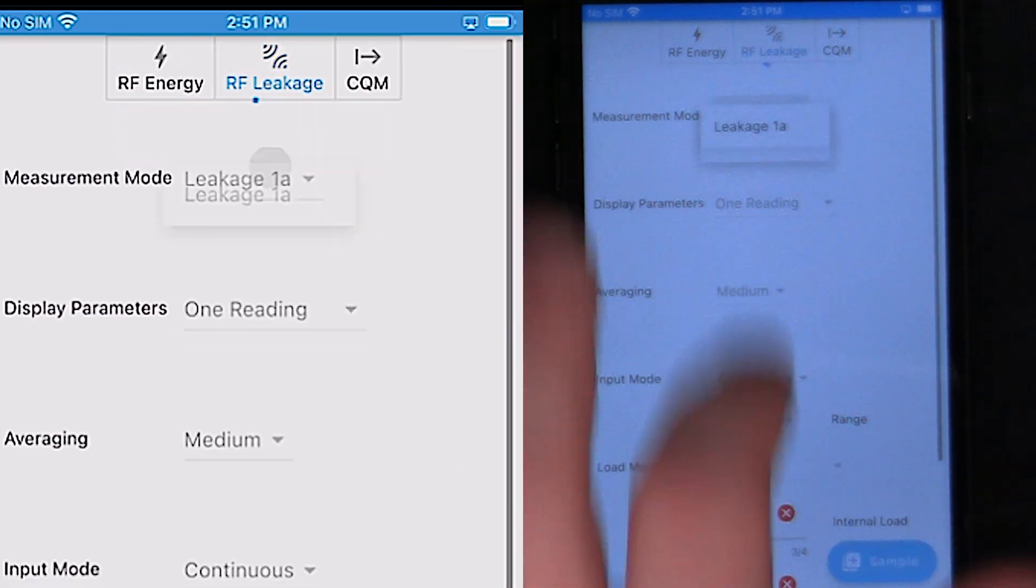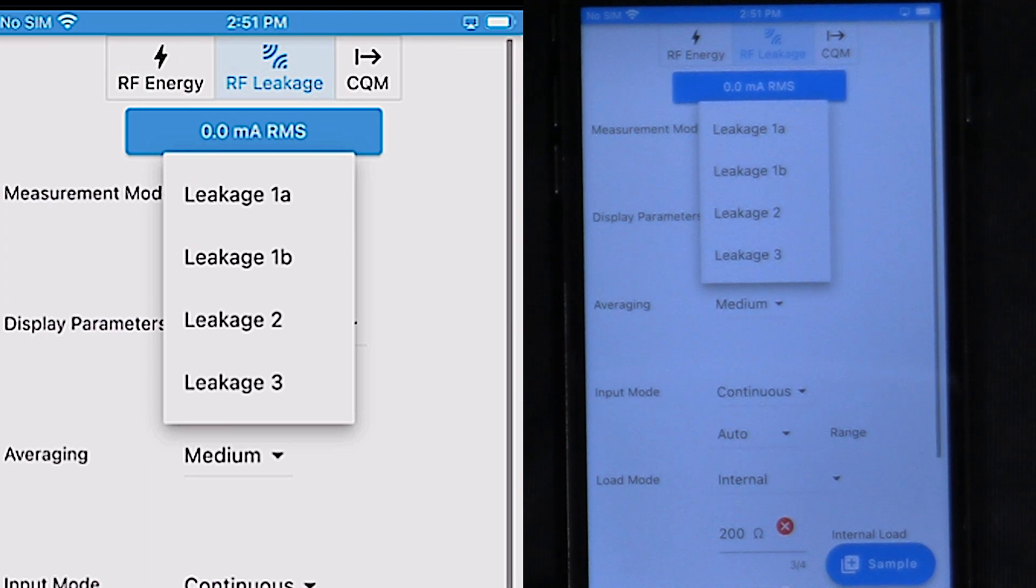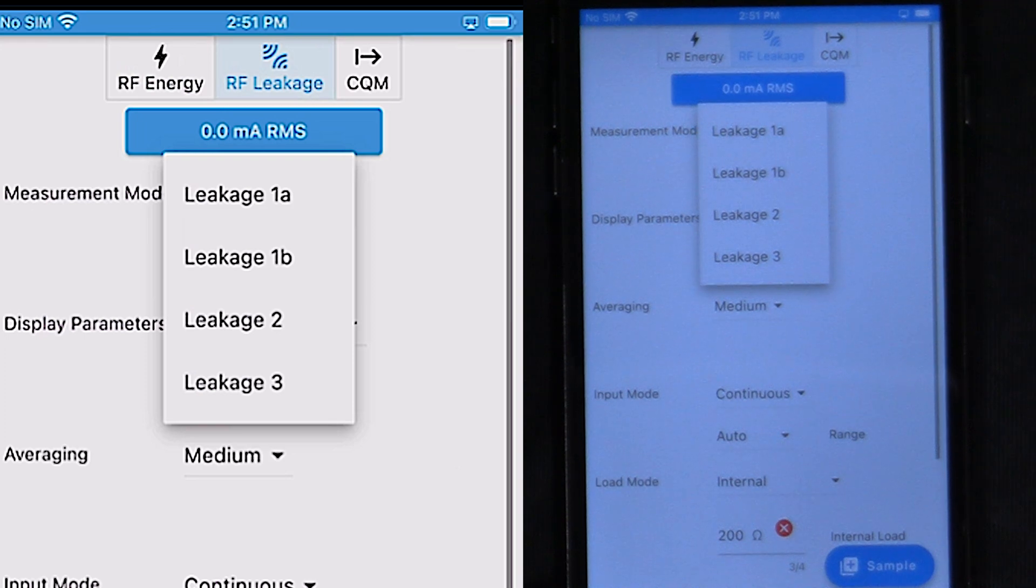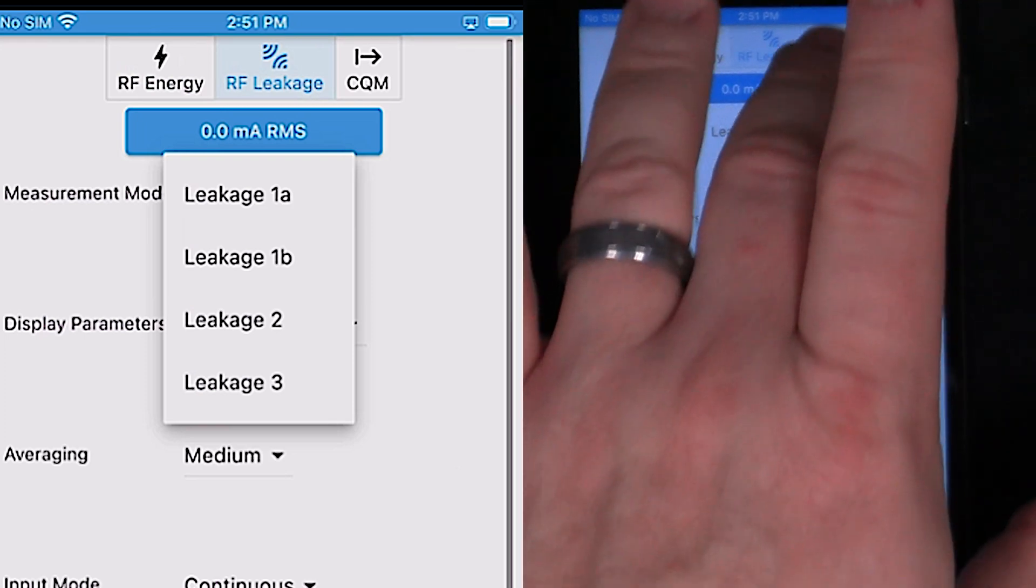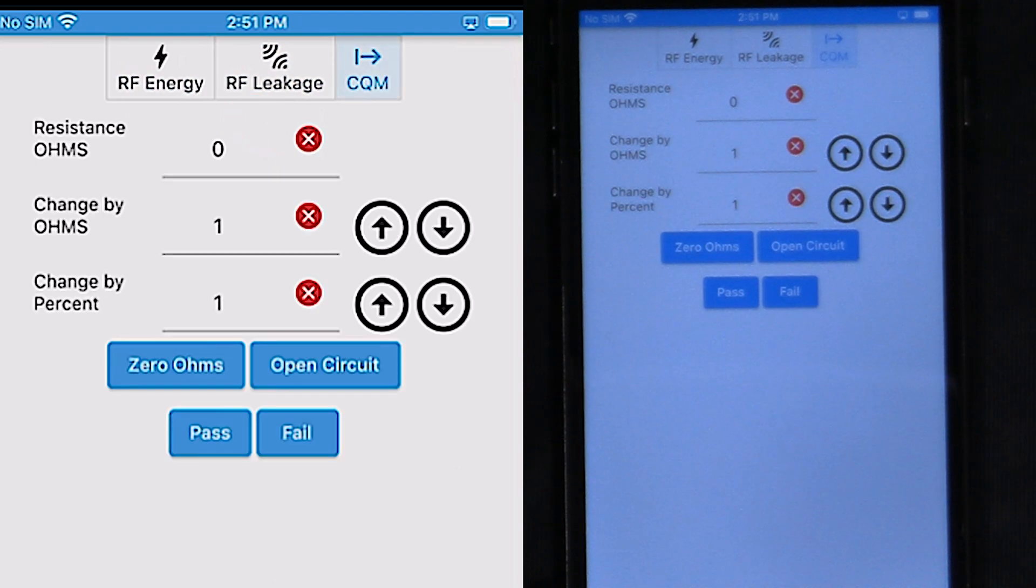We have leakage 1, 1A, 1B. 1B is for testing the REM port. Leakage mode 2 and 3 are for testing the generator under load. We can also move over to CQM testing. That will allow us to simulate a CQM load for the generator.